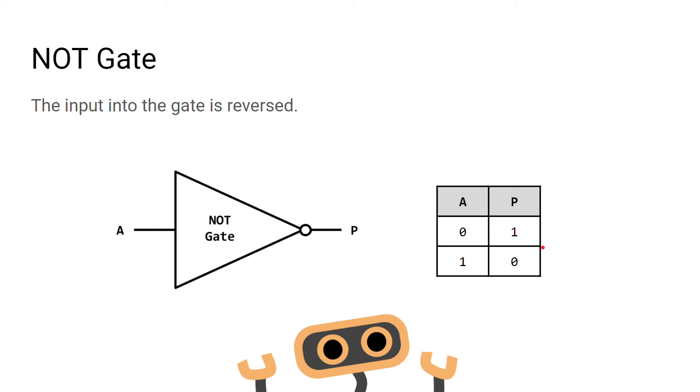The last logic gate is a NOT gate. It takes one input and provides one output. Any input that goes into the gate is reversed—if 0 goes in, 1 comes out, and if 1 goes in, 0 comes out.